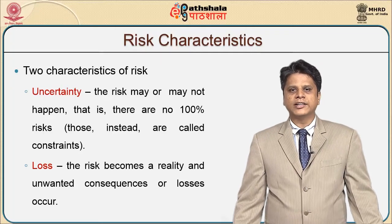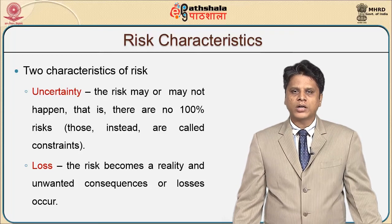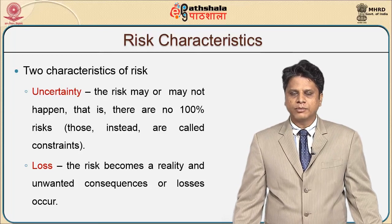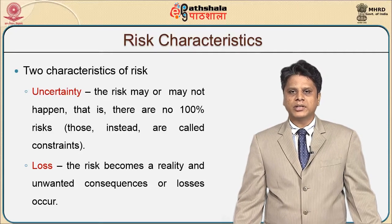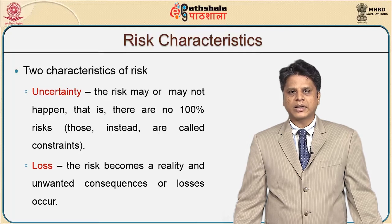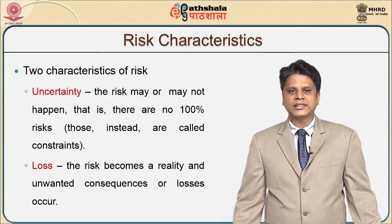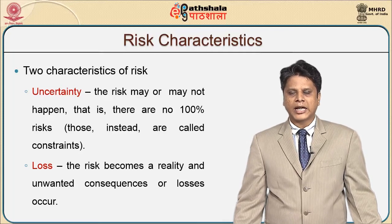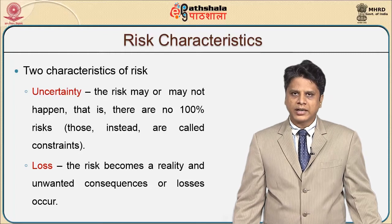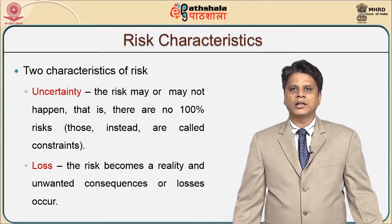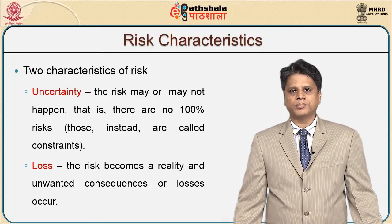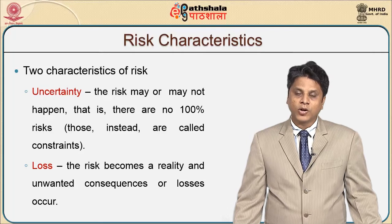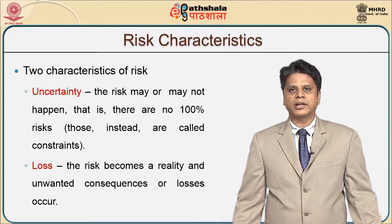Because of its uncertain nature, a risk may or may not happen. Uncertainty is something where the risk may happen or it may not happen — there are no 100 percent risks; those instead are called constraints. At times, we are limited with certain constraints which indicate the possibilities of a risk occurring, but it may not happen also. In that case, we are uncertain in nature — it becomes fuzzy.